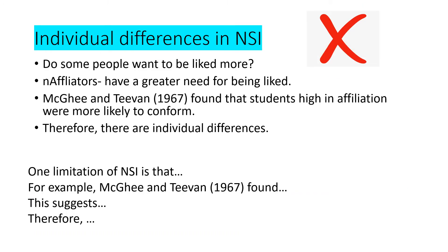Now we have a limitation: individual differences in normative social influence — the need to be liked. Do some people want to be liked more? There are things called N-affiliators who have a greater need for being liked. McGee and Stephen found that students higher in affiliation were more likely to conform — so there are individual differences which this explanation doesn't necessarily take into account. I've put sentence starters at the bottom so you can have a practice at writing that one up yourselves.